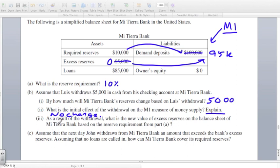Part III. As a result of the withdrawal, what is the new value of the excess reserves on the balance sheet of Mt. Tierra Bank based on the reserve requirement from Part A? Okay, well, it would be tempting to say zero because they paid out the $5,000 to this person that took out the $5,000. But because now their demand deposit has fallen to $95,000, they no longer have to hold $10,000, right? How much do they have to hold? They have to hold $9,500.